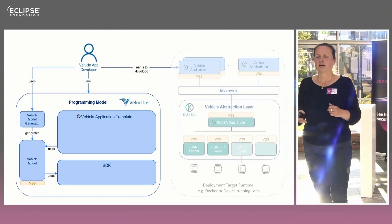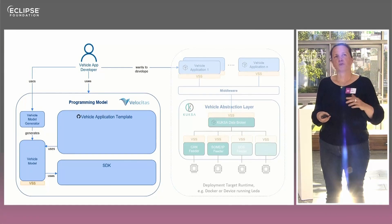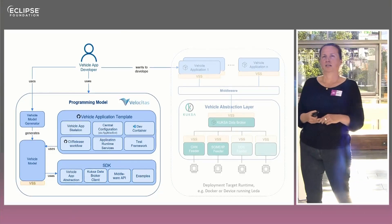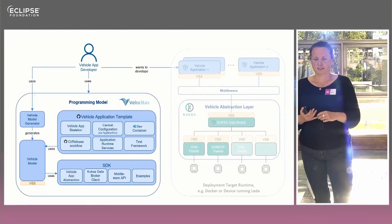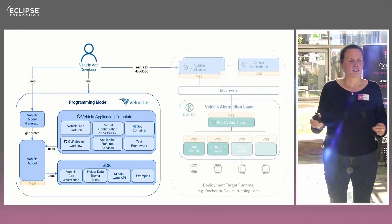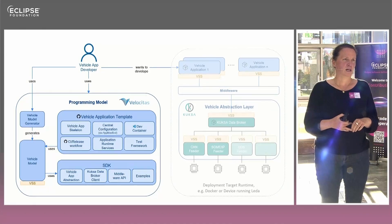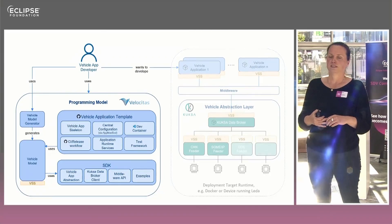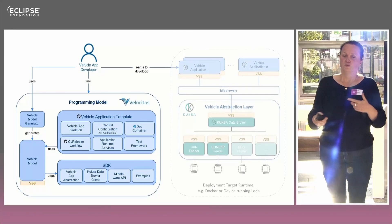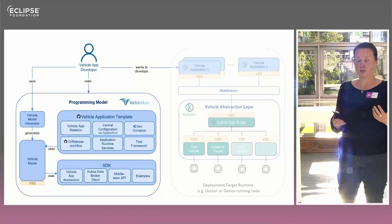After you have done that, you can simply use our template repository. You have seen that already in the presentation from Dirk, where you saw how a project will be generated out of the template. Our template repository consists of a dev container. When you use this template repository, create your own repository and open it in Microsoft Visual Studio Code, everything required for your programming language will automatically be installed. In addition to that, we have a central configuration file. That means you can in one place define the vehicle name and define which model you would like to use — for example, the default vehicle model or a specific model that you have generated before.